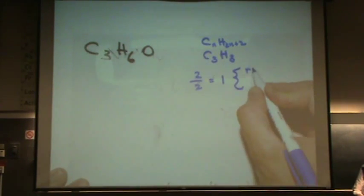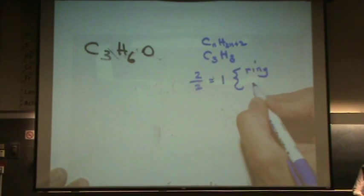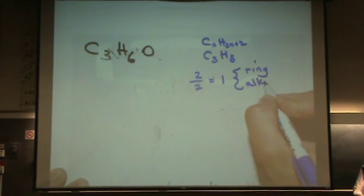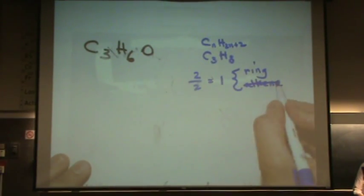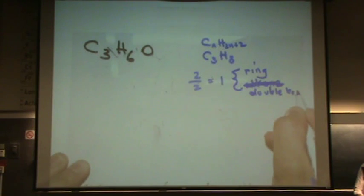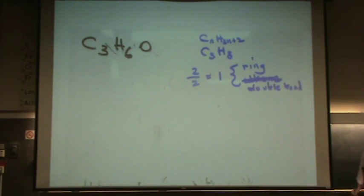One degree of unsaturation means I have a ring, or I have an alkene, a double bond. So the oxygen doesn't play a part in it? Does oxygen play a part? Not in the counting of degree of unsaturation. It's not going to affect it.